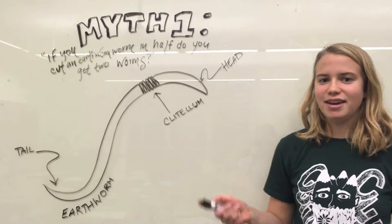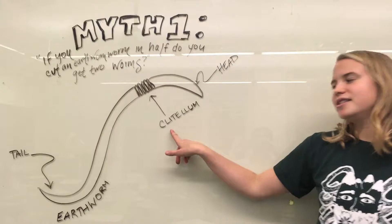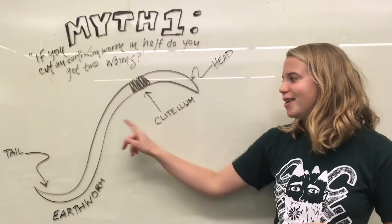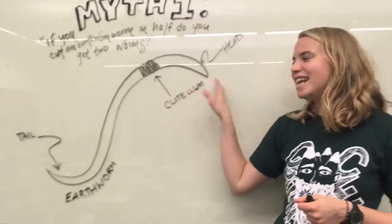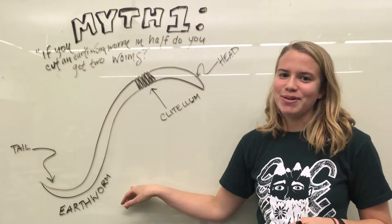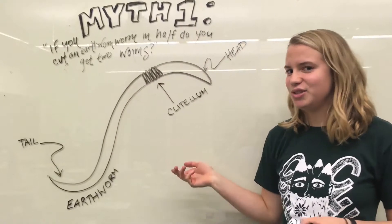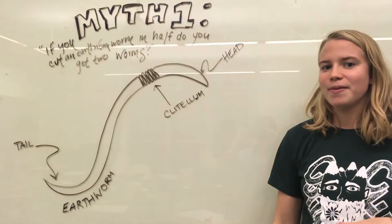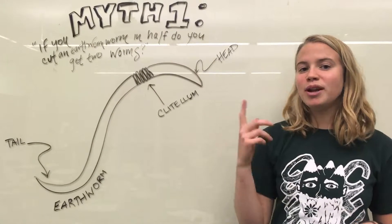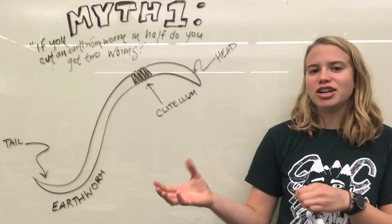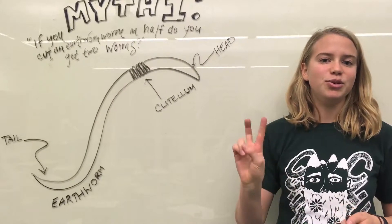So as Emily said, we can see here, this is the clitellum that she was talking about. So if you cut behind the clitellum, the beginning of it will survive and the end of it will not survive. So you don't get two worms if you cut this worm in half. But there are some exceptions to this rule, and there is one type of worm that will actually regenerate itself and will result in two worms.